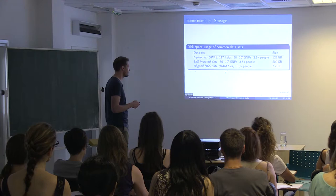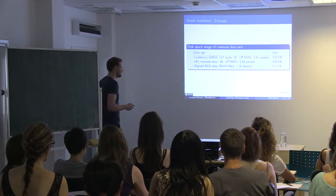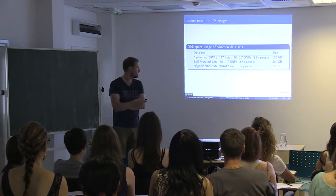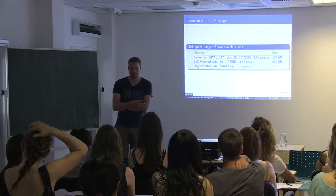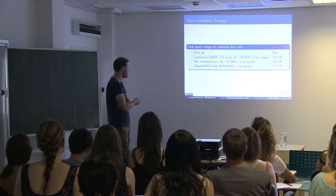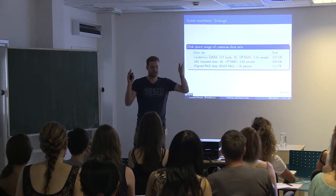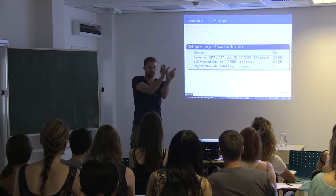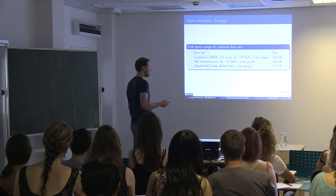To give you an idea of scale: a lipidomics GWAS with 117 lipids, 20 million SNPs, and 3,500 people produces 122 gigabytes. Once you start QC and keep old copies, it grows. Genetic imputation using the 1000 Genomes Project for 30 million SNPs and 3,500 people is roughly 500 gigabytes to a terabyte. Next-generation sequencing alignment data for around 1,300 people is 7.2 terabytes — and that's just the aligned data. You don't put this on your laptop.